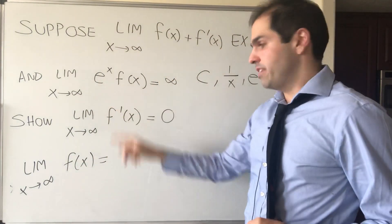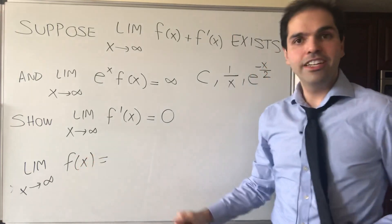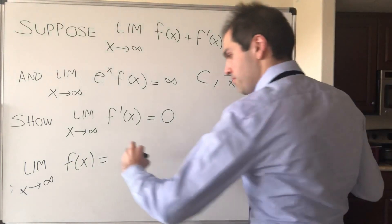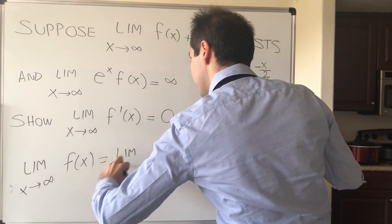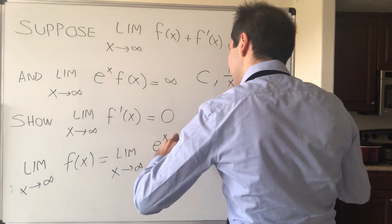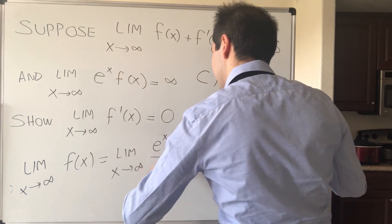And moreover, we have e to the x times f, so how about, and here's the trick, just multiply top and bottom by e to the x. So that becomes the limit as x goes to infinity of e to the x f of x over e to the x.